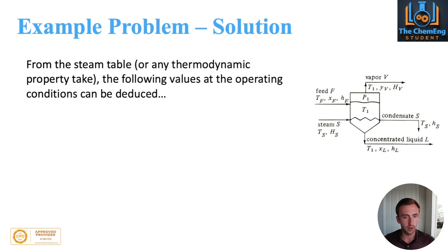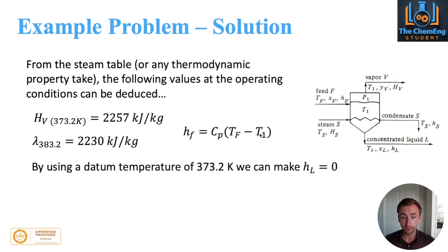From what we use as a steam table here, you can get that in any thermodynamic property table. We can take the following values. We can have the enthalpy of the steam which comes in at 373.2 Kelvin, and that gives us 2257. We have the latent heat of the steam at 383.2, which gives us 2230 kilojoules per kilogram. This is the enthalpy of the feed calculation. We have the specific heat capacity of the material, our feed temperature, and our reference temperature. Our reference temperature we're going to take is 373.2 degrees Kelvin, because what that allows us to do is make the enthalpy of the liquid equal to zero. We actually neglect one of the terms, so this entire term will become zero, which makes our life a bit easier.